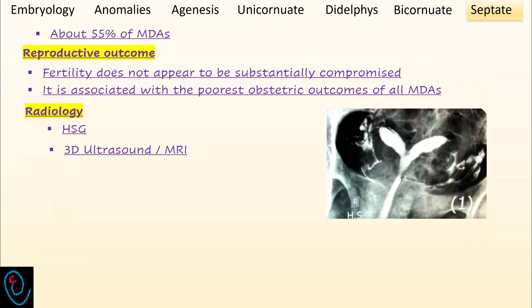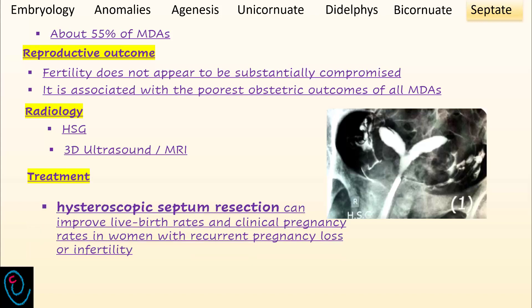Uterine septum is the most common congenital uterine anomaly and accounts for about 55% of all Müllerian duct anomalies. Fertility does not appear to be substantially compromised; however, this anomaly is associated with the poorest reproductive outcome of all Müllerian duct anomalies. Hysterosalpingography and 2D ultrasound are not helpful in differentiating between a septate and bicornuate uterus. 3D ultrasound and MRI add more information and are helpful in differentiation. Regarding treatment, hysteroscopic septum resection can improve live birth rates and clinical pregnancy rates in women with recurrent pregnancy loss and infertility.